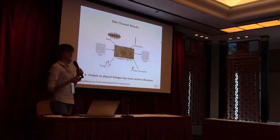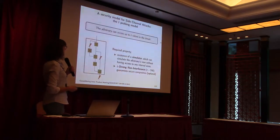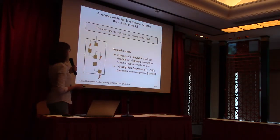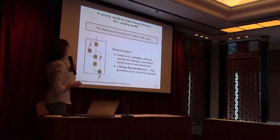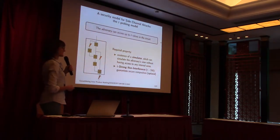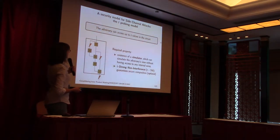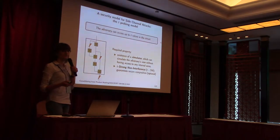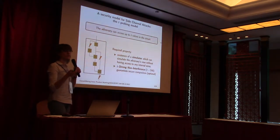All these leakages can give some sensitive information about the values. The security model that formalizes the side-channel attack is the T-probing model. In the T-probing model, an adversary can access up to T values in a circuit. Usually a circuit looks like something like this — in these blocks you can see we have some operations, for example some linear operations or some nonlinear operations like the multiplication.